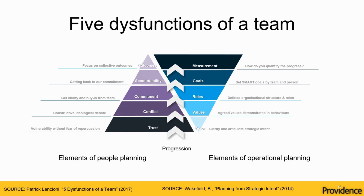Teams that win hold each other accountable — NBL teams, cricket teams, share trading teams, book clubs, amazing marriages. 'I thought we agreed how we would parent — I'm confused why we're going stage left. Help me understand.' 'Oh, I'd forgotten we made that commitment. Let's have a conversation.' You realise how far up the pyramid we've come: to receive feedback, you have to trust that I have your best interests at heart, that I'm watching you and mean you well. If I can't have that conversation, I've got to go all the way back down and work on trust — where did we stop believing we were on the same team?